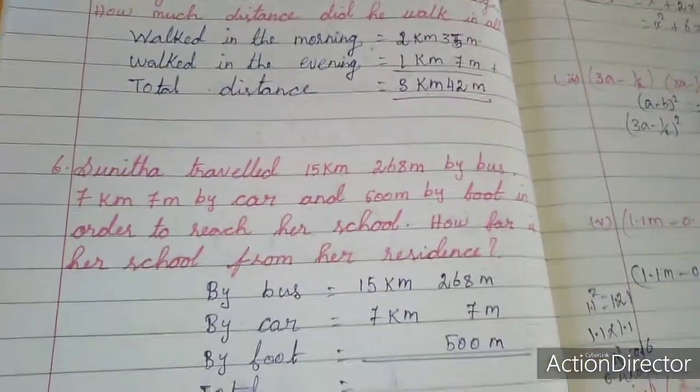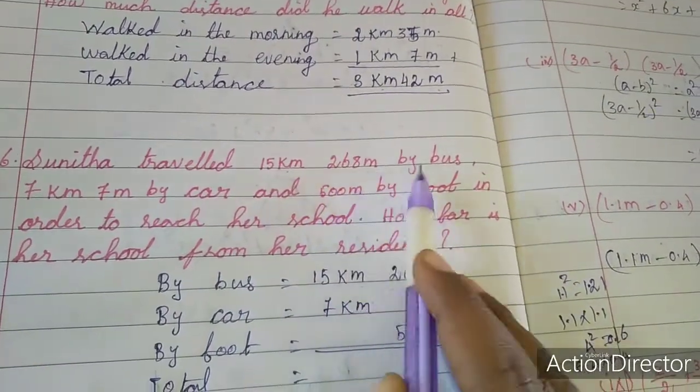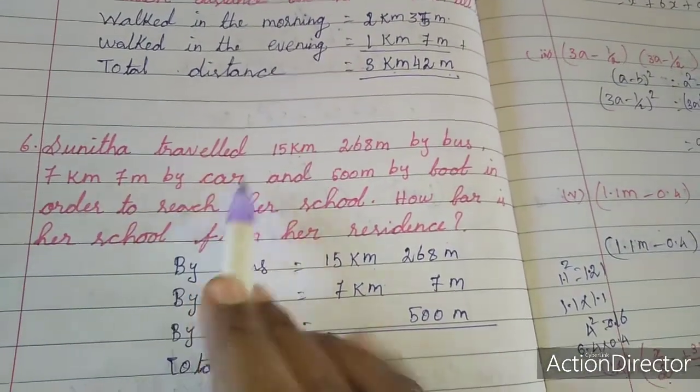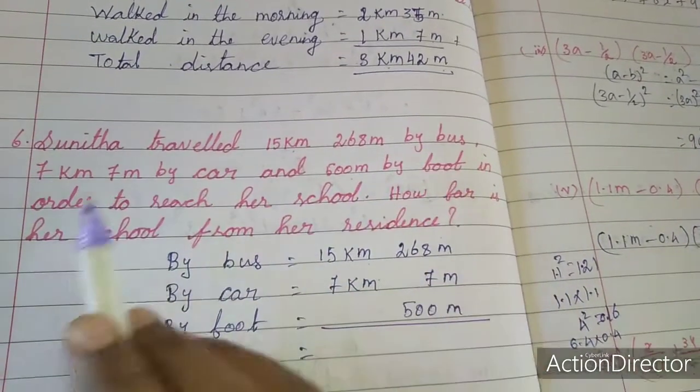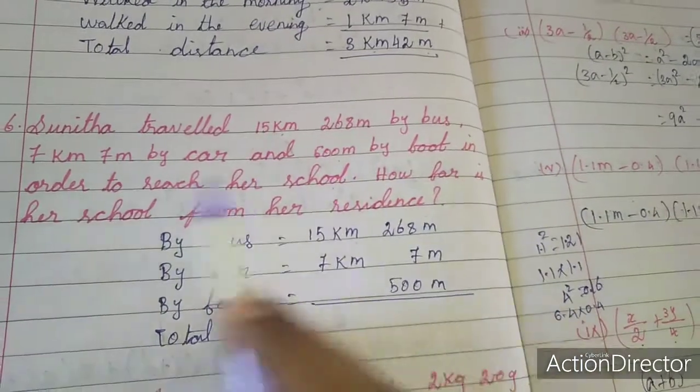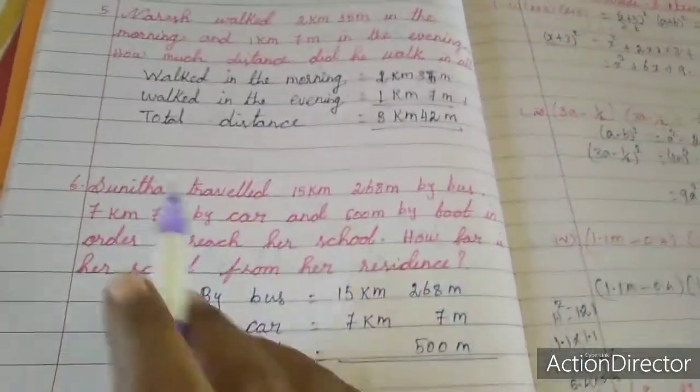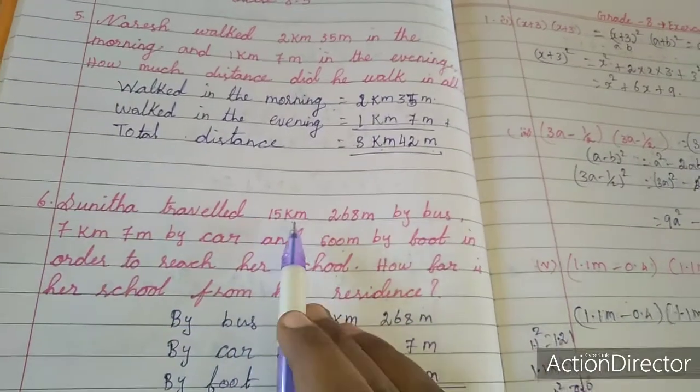Now 6th sum. Sunita traveled 15 km 268 m by bus, 7 km 7 m by car and 500 m by foot in order to reach her school. How far is her school from her residence?